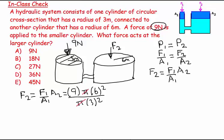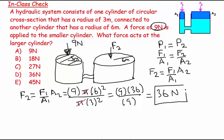And you know, conveniently, the pi's cancel out, so we get this equal to 9 times 36 over 9, which equals 36 Newtons. So simple question.